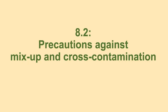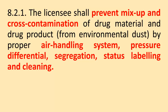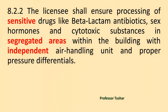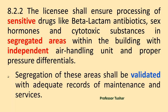Precautions Against Mix-up and Cross-Contamination: The licensee shall prevent mix-up and cross-contamination of drug material and drug product from environmental dust, by proper air handling system, pressure differential, segregation, status labeling and cleaning. Proper records and standard operating procedures shall be maintained. The licensee shall ensure processing of sensitive drugs like beta-lactam antibiotics, sex hormones and cytotoxic substances in segregated areas within the building with independent air handling units and proper pressure differentials. Segregation of these areas shall be validated with adequate records of maintenance and services.